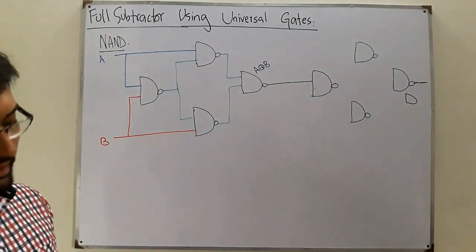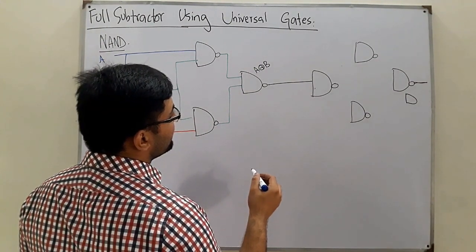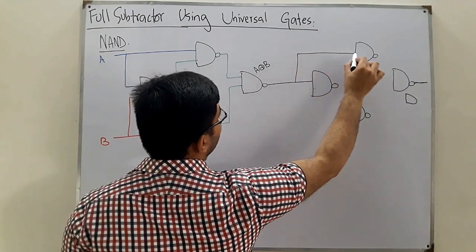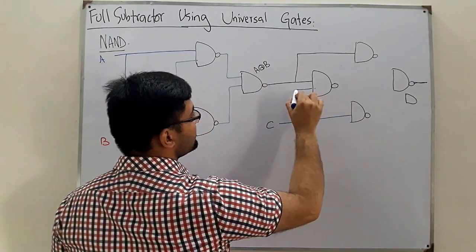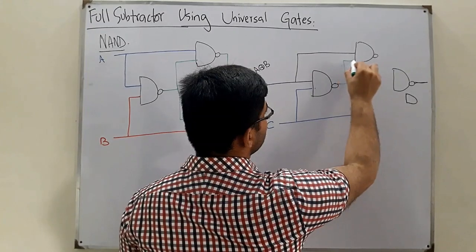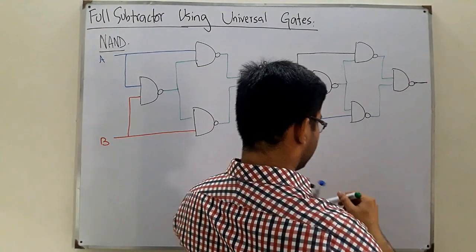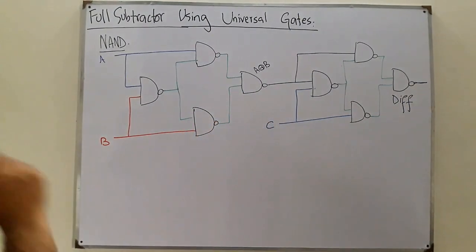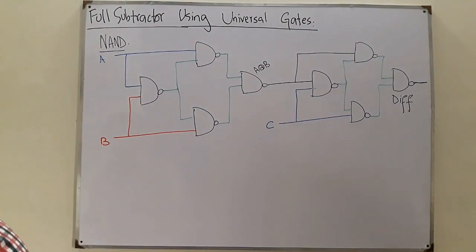This output is A XOR B. The C input is given to two additional gates as well, and A XOR B is also fed into one of those gates. The outputs of these gates are combined, and we finally get the difference output D. For the borrow, we take outputs from two specific gates and NAND them together.